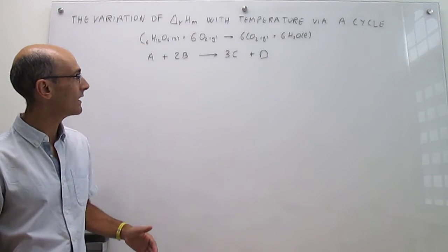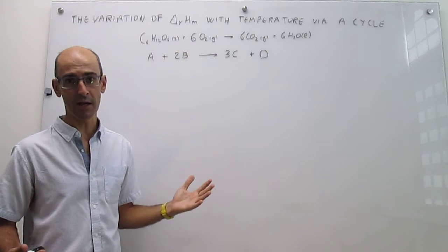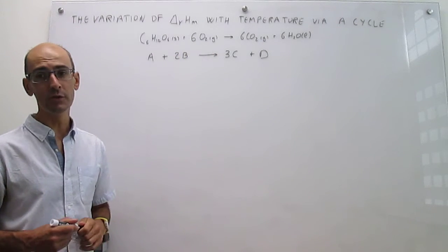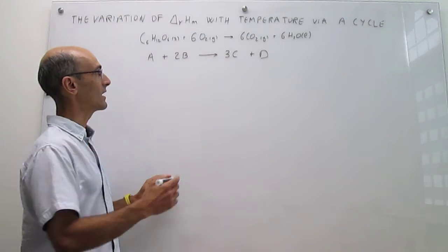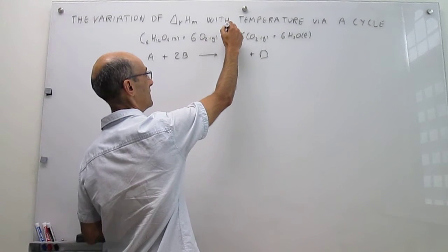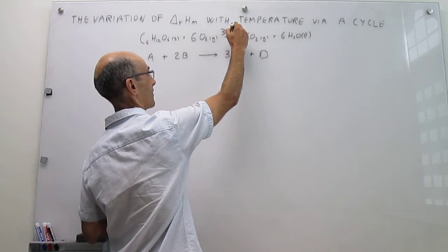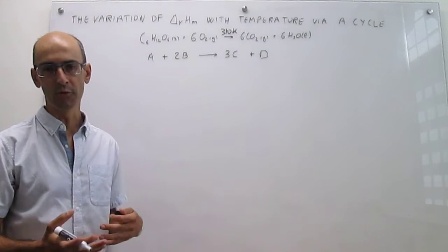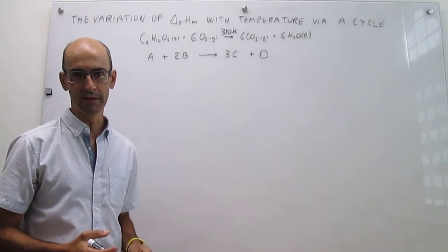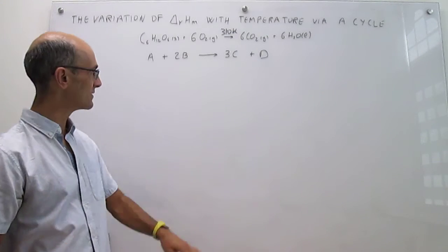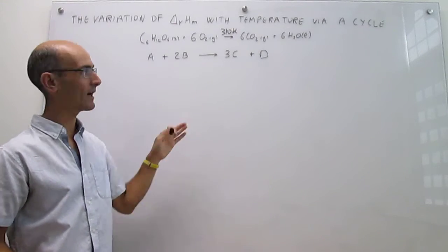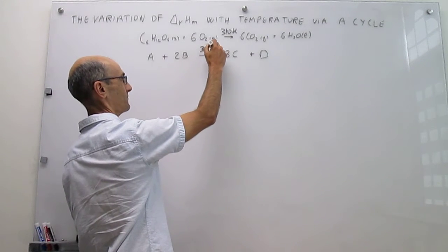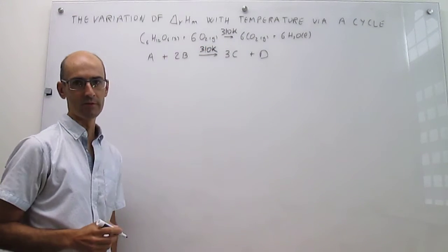Suppose that you take a metabolic reaction like the combustion of glucose, and you want to know the enthalpy of that reaction at 310 Kelvin. We'll choose a more generic reaction to avoid having to write all those complicated formulas and stoichiometric coefficients. Our goal would be to calculate that at 310 Kelvin.